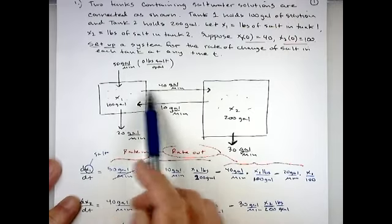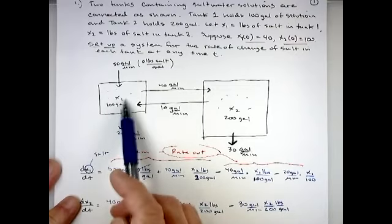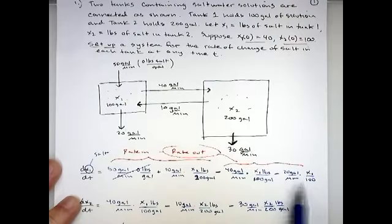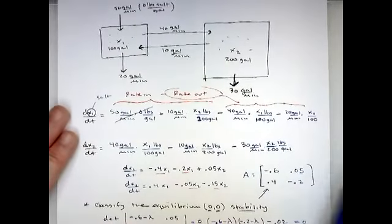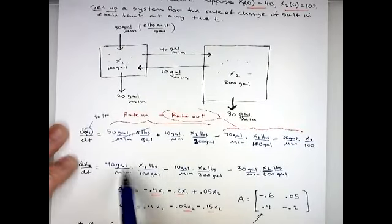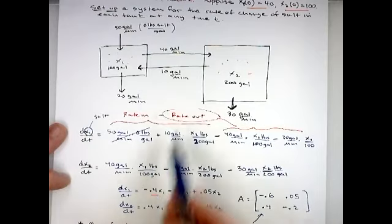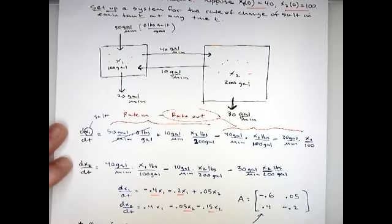For rate out of tank one: 40 gallons per minute going into tank two, multiplied by x1 over 100 gallons; and 20 gallons per minute leaving the system, also multiplied by x1 over 100. For tank two, rate in is 40 gallons per minute from tank one, multiplied by x1 over 100. Leaving tank two is 10 gallons per minute times x2 over 100 minus 30 gallons per minute times x2 over 200.